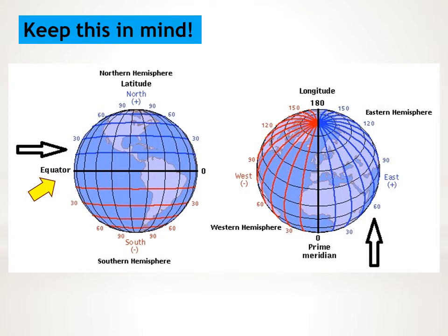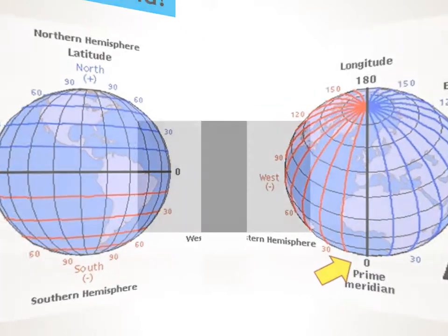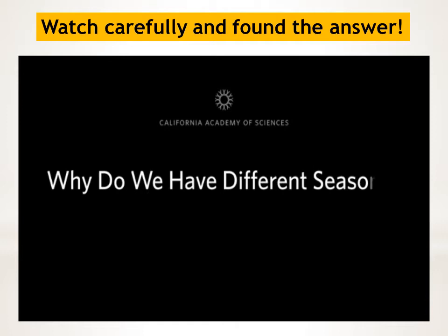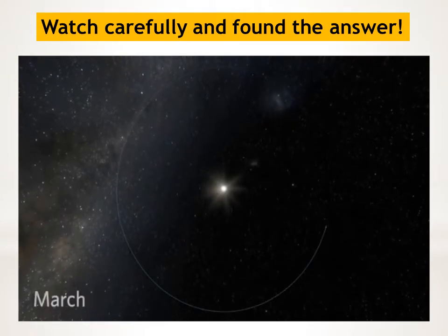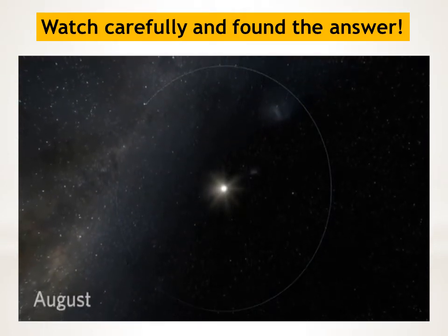Here we have the equator. The equator divides our earth into the northern hemisphere and the southern hemisphere. We also have the prime meridian, which divides our earth into the eastern and the western hemisphere. And look at those lines — can you see the latitude and the longitude? They make up our earth's grid.